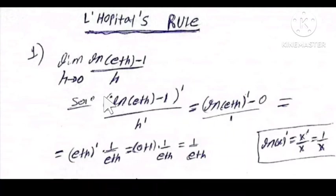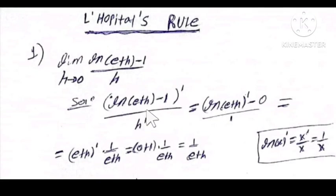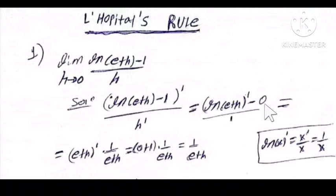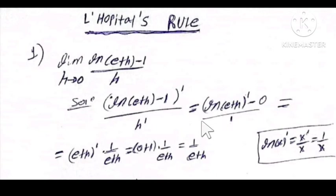L'Hôpital's rule says: take the derivative of the numerator over the derivative of the denominator, simply. Therefore, the derivative of the numerator: the derivative of ln(e+h) minus the derivative of 1, which is 0. And the derivative of h — h is a variable, therefore the derivative of a variable is always 1.